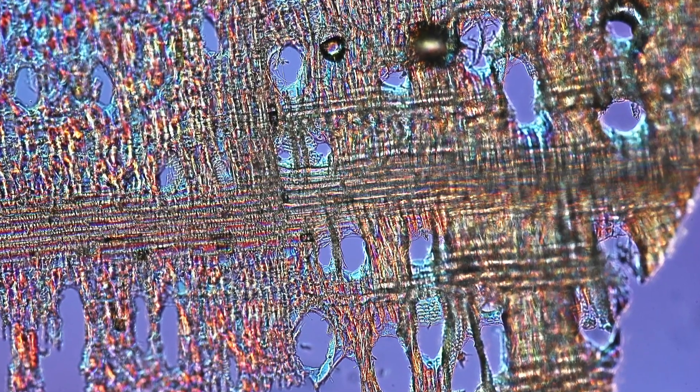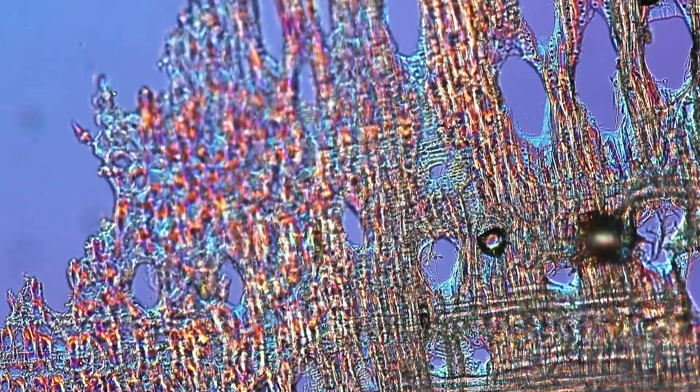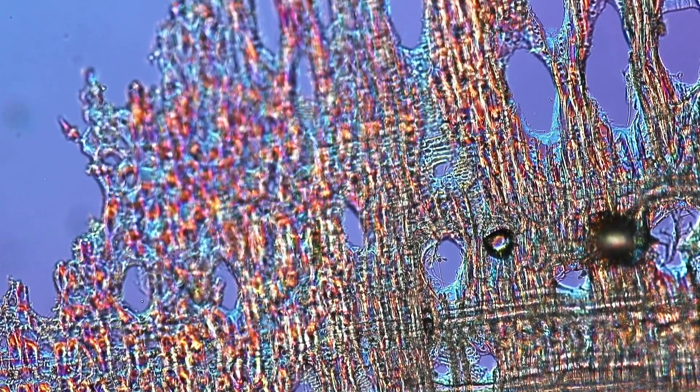But my point really here is that we are now able to see cells running crisscross into different directions. Now let's try a different cross section here, because this is now the longitudinal section. Let's try the cross section of the wood.